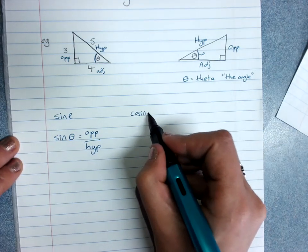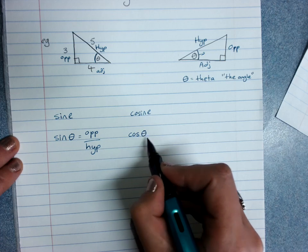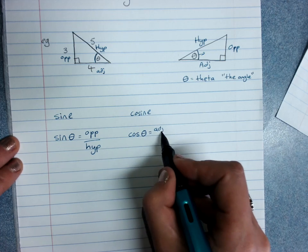Cosine is the next one, abbreviated cos. Cos of the angle is adjacent over hypotenuse.